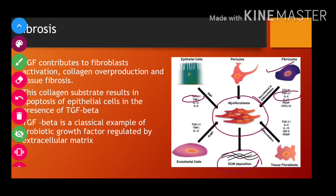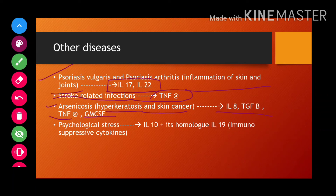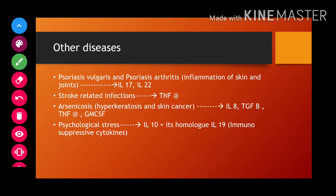Other diseases include psoriasis vulgaris and psoriatic arthritis — inflammation of the skin and joints — where the responsible cytokines are interleukin-17 and interleukin-22. Stroke-related infections show TNF-alpha presence. For acanthosis, hyperkeratosis, and skin cancer types, IL-8, TGF-beta, TNF-alpha, and GM-CSF play important roles. IL-10, as an anti-inflammatory and immunosuppressive cytokine, also plays a regulatory role in these diseases.